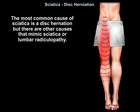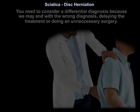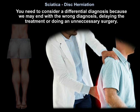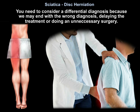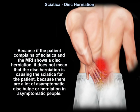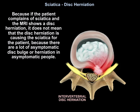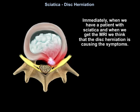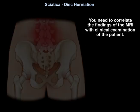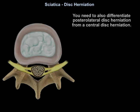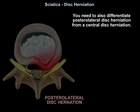The most common cause of sciatica is disc herniation, but there are other causes that can mimic sciatica. You need to consider differential diagnoses to avoid the wrong diagnosis, delayed treatment, or unnecessary surgery. Just because a patient complains of sciatica and the MRI shows a disc herniation does not mean the herniation is causing the symptoms — there are many asymptomatic disc bulges in asymptomatic people. Always correlate MRI findings with the clinical examination, and differentiate posterolateral disc herniation from central disc herniation.